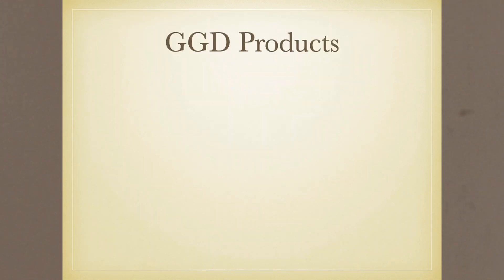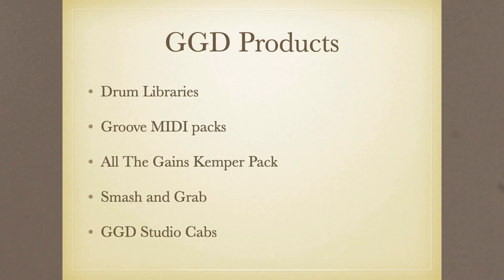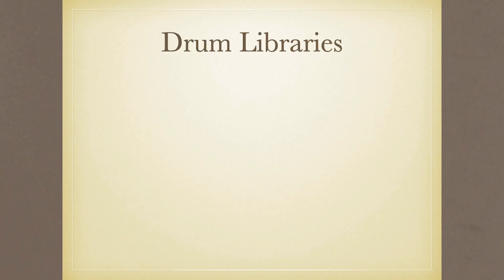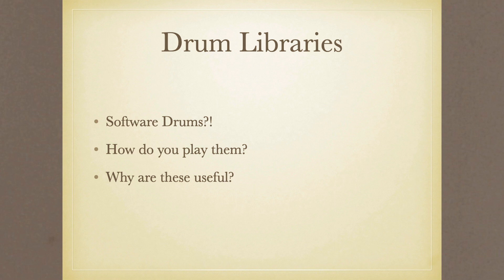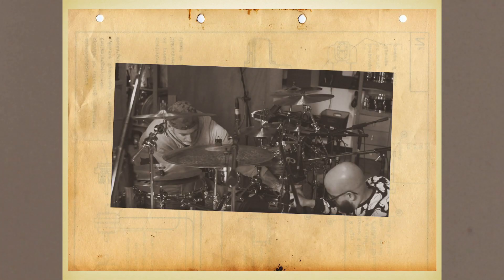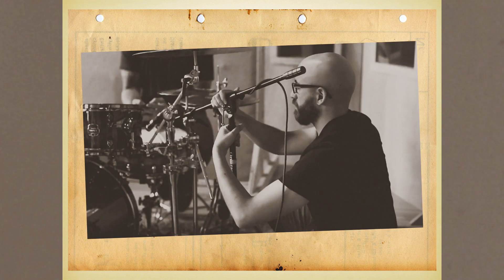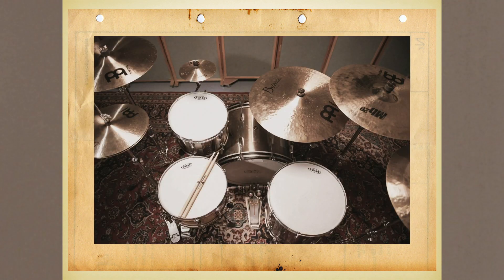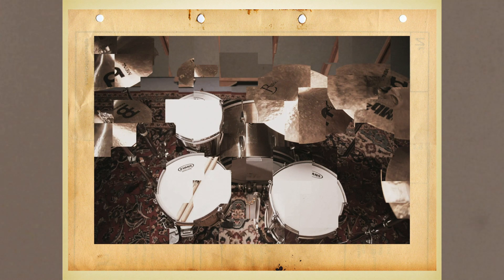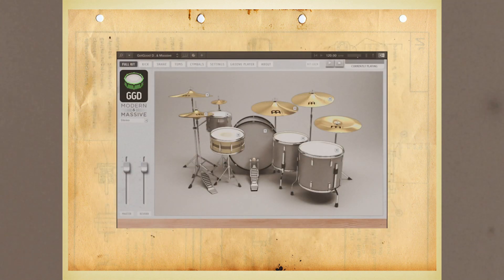Now for the best part of the video - talking about the things that we, Get Good Drums, have to offer, and what exactly each of our products does. First up, we have drum libraries. You know those MIDI instruments we keep referring to? Well, our drum libraries are just drum versions of one of those. We have meticulously recorded a number of different drum kits and cymbals in different drum rooms around the globe, then cut up the recordings into samples and packaged them in a tasty looking interface to load onto your personal computer.